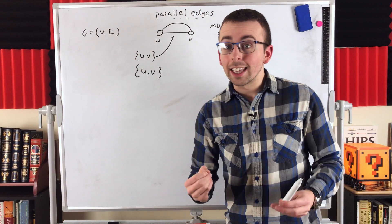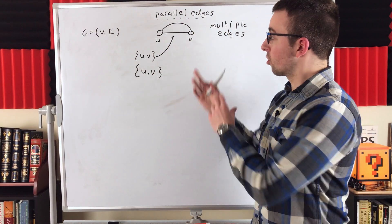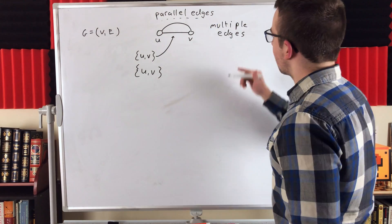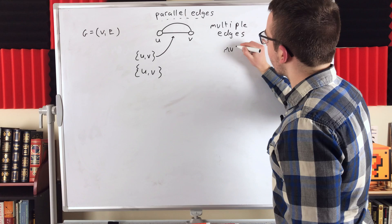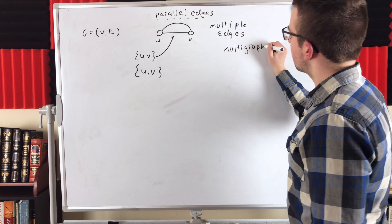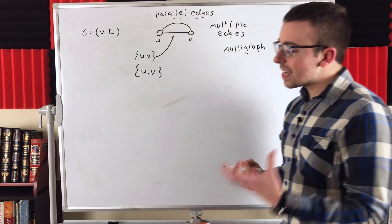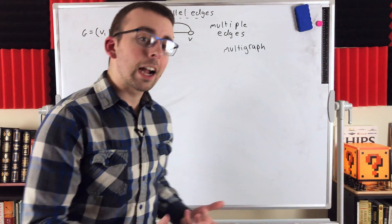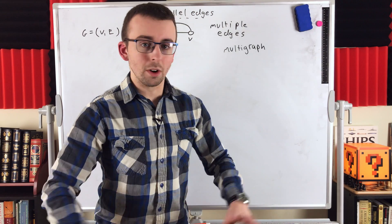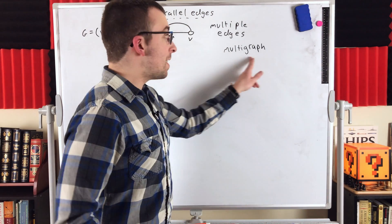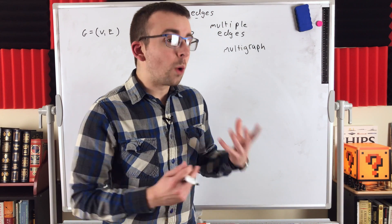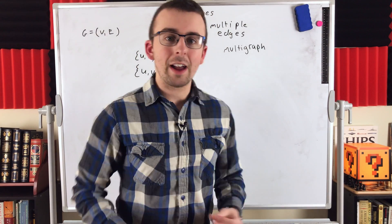In a graph that does allow for parallel edges — which are two edges joining the same pair of vertices — such a graph is often called a multi-graph. But with the term multi-graph, as with many terms in graph theory, you've got to be careful. The definitions of these terms are not universal, so if you read the term multi-graph in a paper or textbook, make sure you're aware of what they're actually defining it to be.